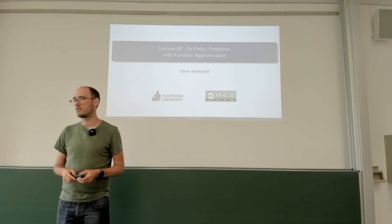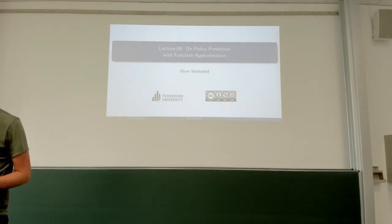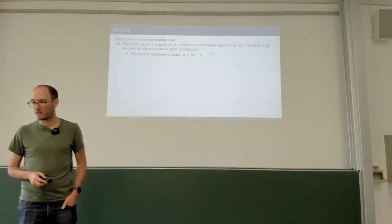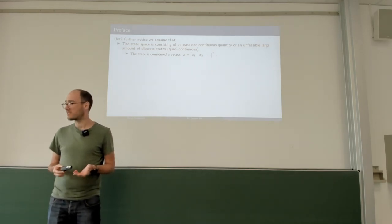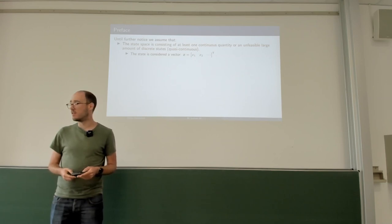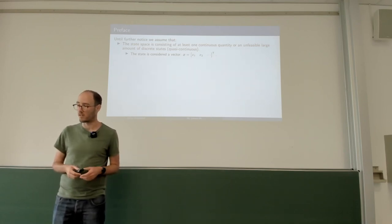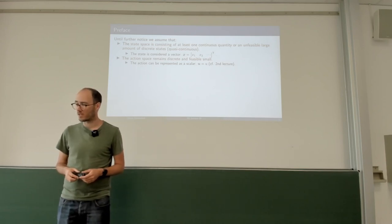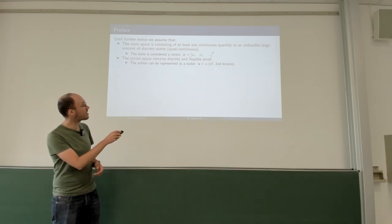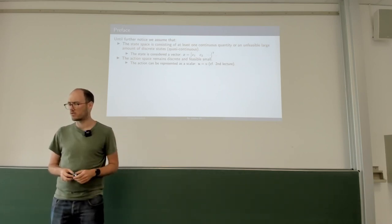So if you have a certain policy, we want to evaluate — given some data of this policy applied to some control plant — how good or bad this policy is with respect to the value function. We will assume that the state space, represented by small x, is a continuous state space now, different from the tabular methods. That means all our states can have any real numbers, so we have an infinitely large state space, potentially also represented as a vector.